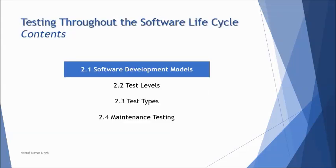We will cover the development models first — what and how testing happens in different methodologies, what different methodologies are available, and how testing can be implemented within them. Section 2.2 will be about test levels: understanding component, integration, system, and acceptance. Test types will cover what is white box and black box testing, and how the difference comes between functional and non-functional testing. We also have a small topic on maintenance testing, which has some new additions compared to the previous syllabus.